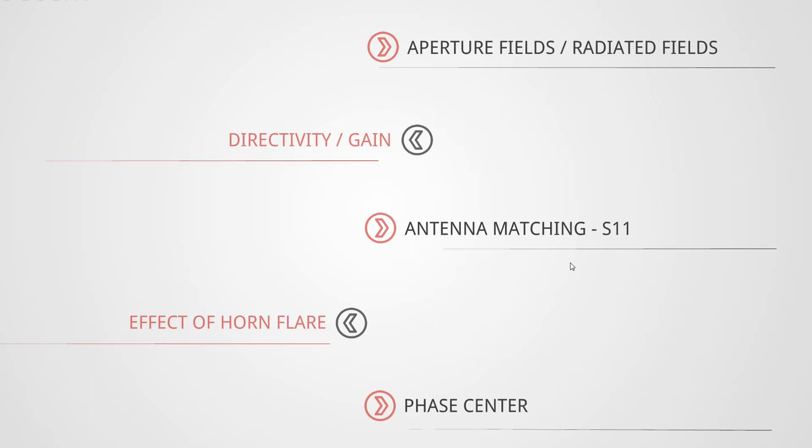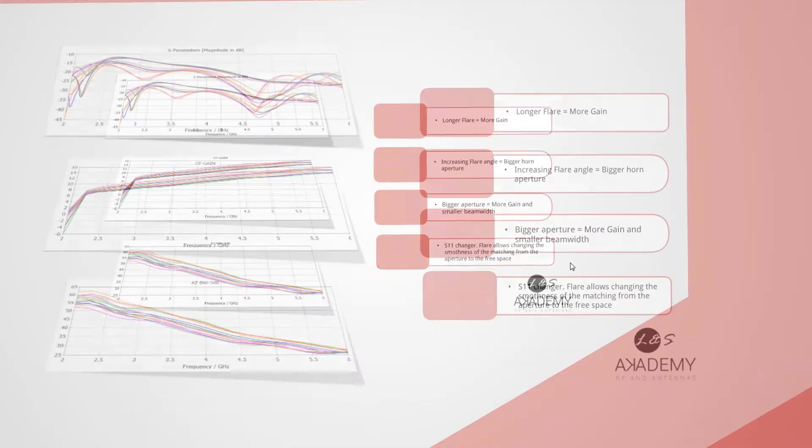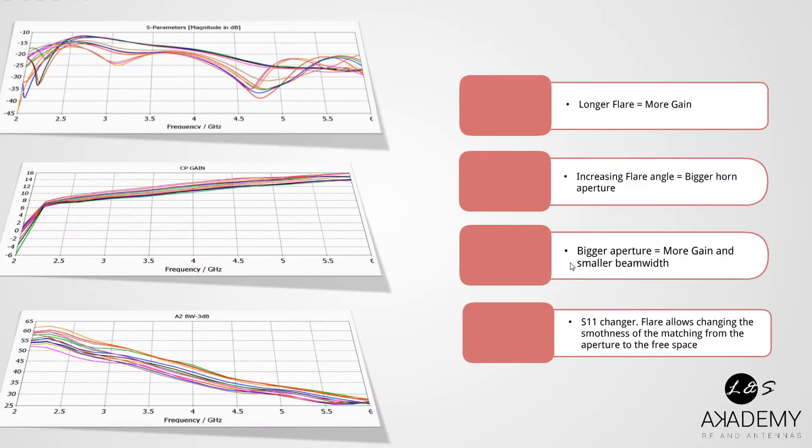Okay, let's continue. Let's move to the fourth point: the effect of flare. What do we mean by flare? Well, basically the flare is the aperture of the horn. We will show you some pictures and you will understand it clearly. For the moment, here the explanation—the theoretical concept of the flare is shown here.